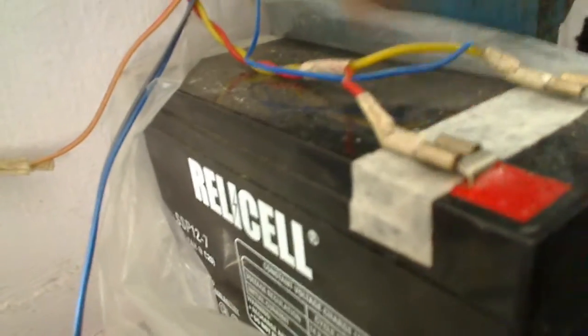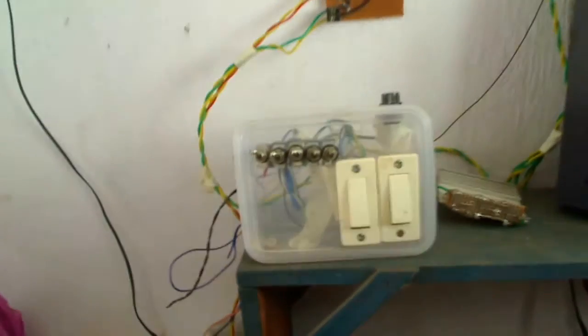So currently these lights are running on my solar charging station. This is the battery, 12 volts battery. It's a 700 power battery on which these LEDs are running. So I'll switch on and show you how the LEDs are lit.